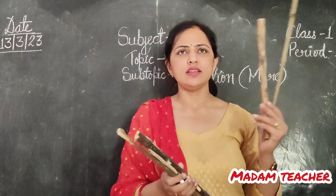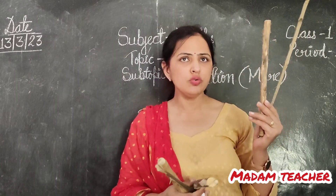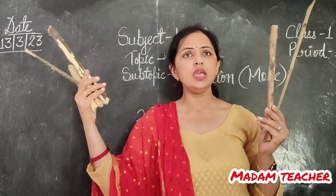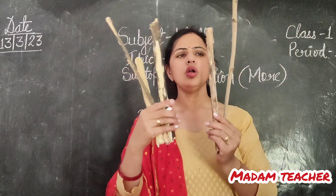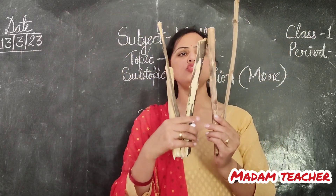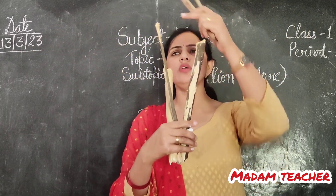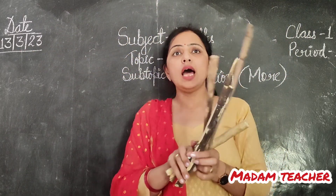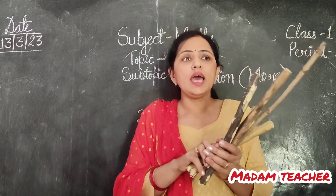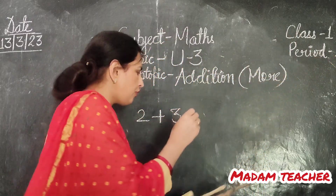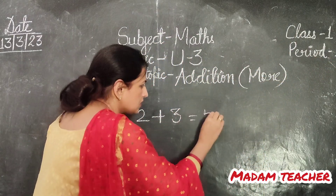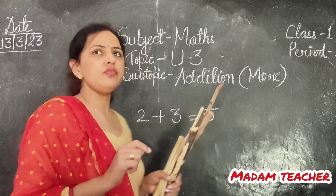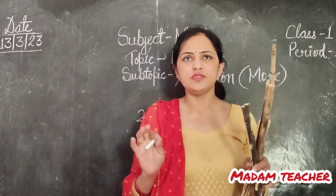How many sticks are there? 2 and here 3. So 1, 2, 3, 4, 5. Now I have 5 sticks. 2 plus 3 equals 5.